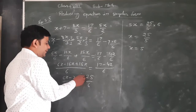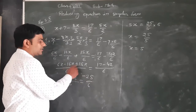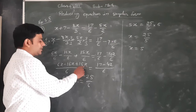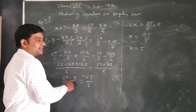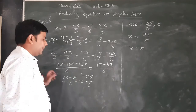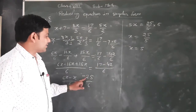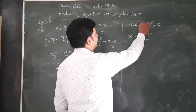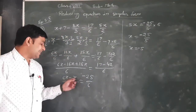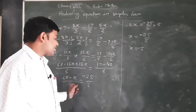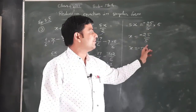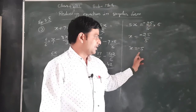Solve करेंगे: minus 16x और plus 15x को subtract करेंगे — एक plus में एक minus में है। 15 - 16 करने पर minus x remaining रहेगा, क्योंकि greater value negative है। 17 - 42 करने पर minus 25 बचेगा, denominator में 6। Transpose करने पर: x/6 = -25/6 से -x = -25/6×6 = -25, तो x = minus 5. 6 cancel हो जाता है, -25/5 = -5. Result is minus 5. That's question number 3 in Exercise 2.5.